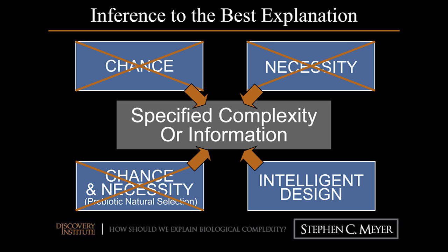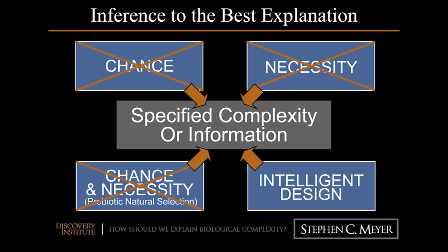I unpacked that case very self-consciously, using inference to the best explanation — looking at explanations for the origin of information based on chance, necessity, and the combination of the two — and concluding that only intelligent design had the known causal powers to produce information. Therefore, when we find information in a living cell and want to best explain it by reference to causes now in operation, intelligent design is in fact the best explanation. This is not an argument from ignorance; it's an argument from what we know about the cause-and-effect structure of the world.